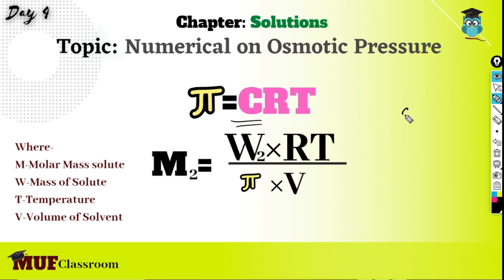Now, C is nothing but N by V, and N is nothing but W₂ by M₂ into V. Substituting this value in C, we get this final equation.